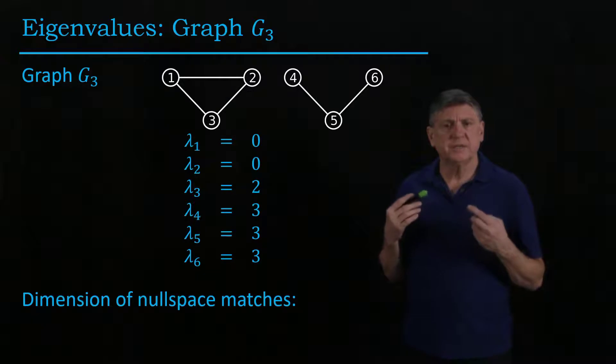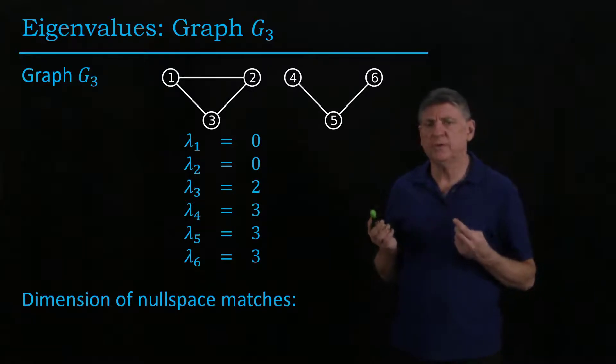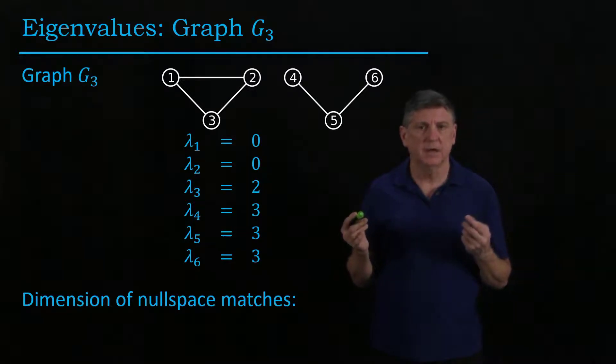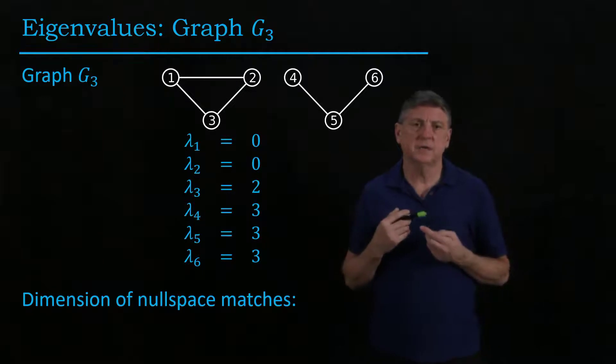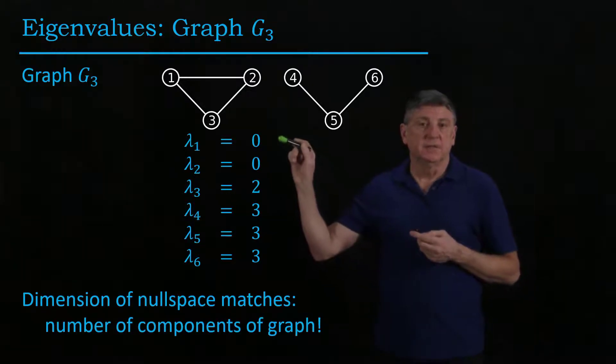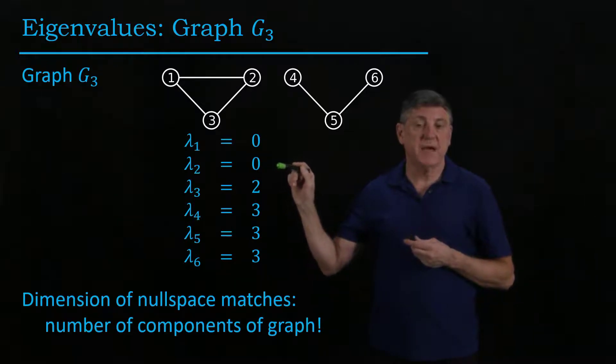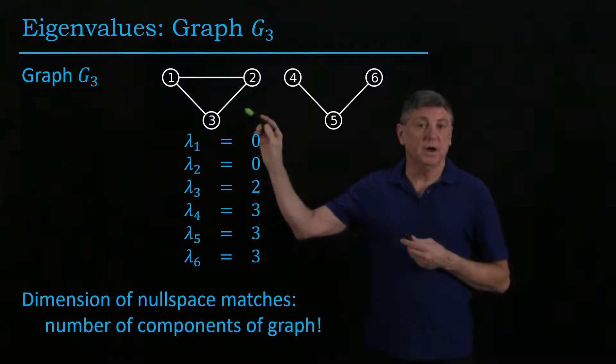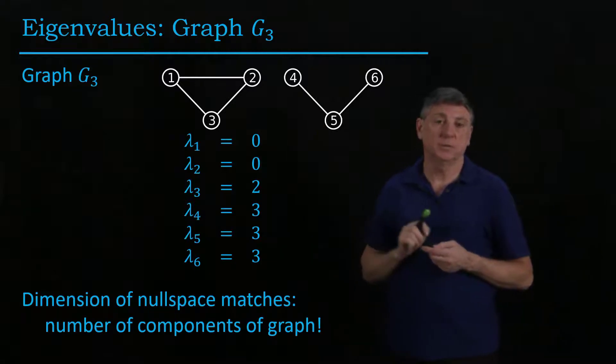And the question is, are we starting to detect a pattern? And one of the patterns that I'll draw your attention to is this, is that the dimension of the null space is matching the number of components in the graph.